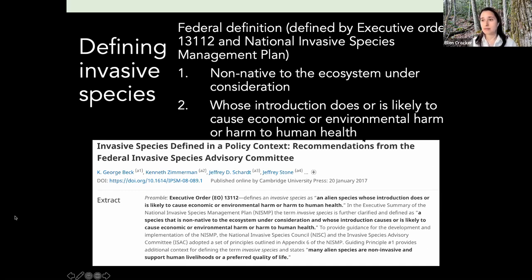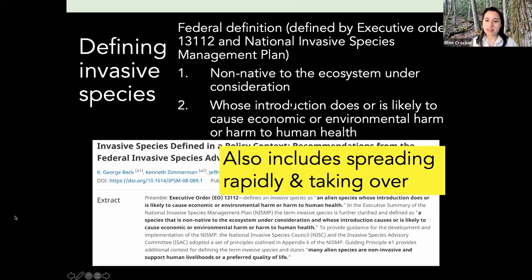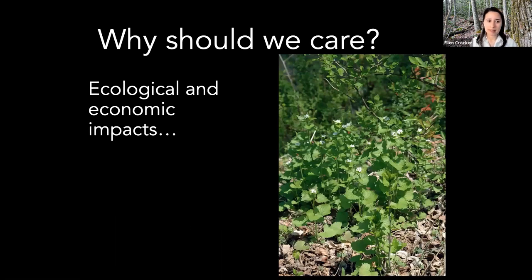That's the formal federal definition, and every state comes up with its own lists of invasive plants based on calculations about environmental impact. But I'd also say that most invasive species tend to spread rapidly and take over. We don't really care if there's just a couple staying put — but many invasive species can just take over, which is part of why they're such a big problem.